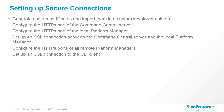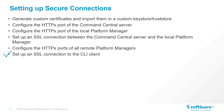Before we start configuring the custom certificates, let's review the high-level steps we should complete. First we have to generate custom certificates and import them in a custom key store and trust store. Then configure the Command Central Server HTTPS port to use the custom key store. Then configure the Local Platform Manager HTTPS port to use the custom key store. Set up an SSL connection between the Command Central Server and the Local Platform Manager. Configure the HTTPS ports of all remote platform managers, and finally set up an SSL connection to the CLI client.